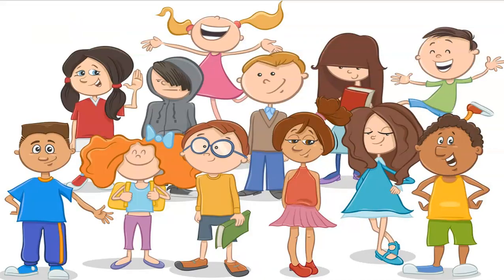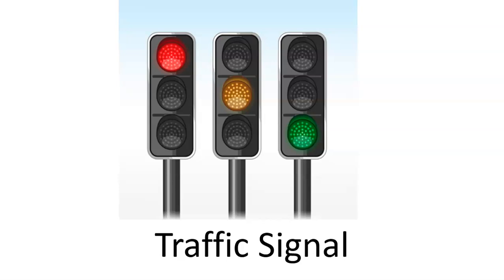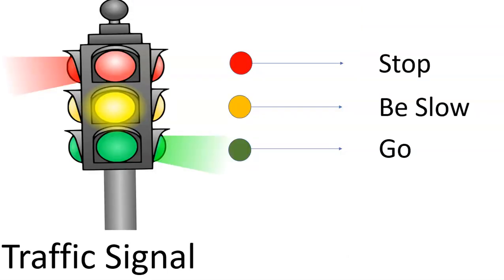Hello children, how are you all today? Let us learn about some of the traffic rules. Traffic signal or lights are signaling devices positioned at roads and other locations to control the flow of traffic. As you can see in the picture, red denotes stop, amber light says be slow, and green says go.